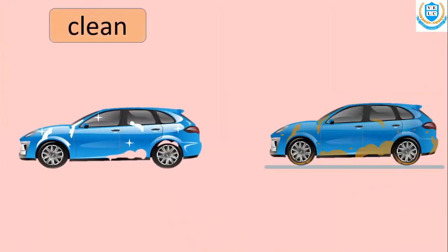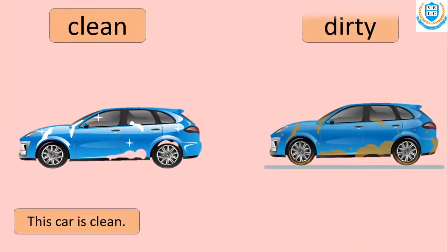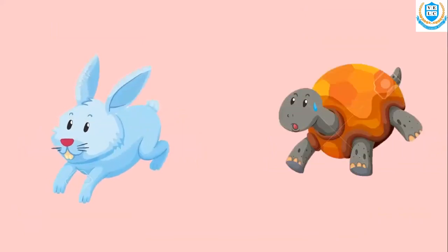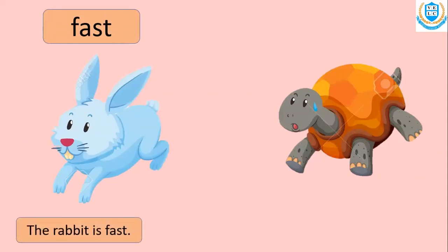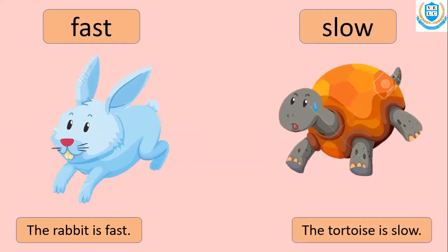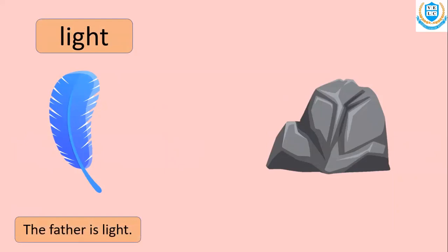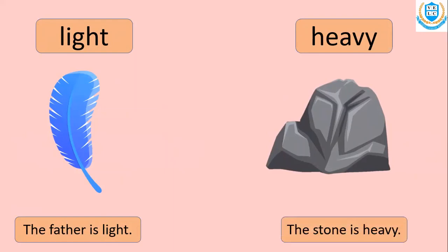Clean — this car is clean. Dirty — that car is dirty. First — the rabbit is first. Slow — the turtle is slow. Light — the feather is light. Heavy — the stone is heavy.